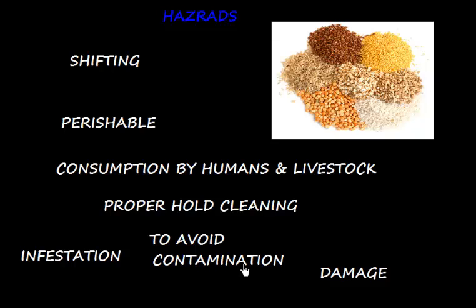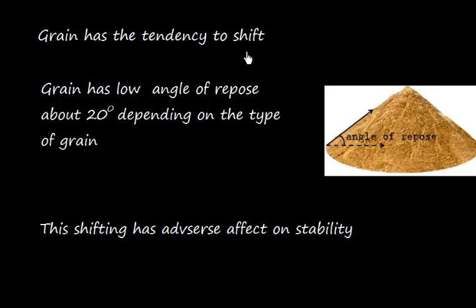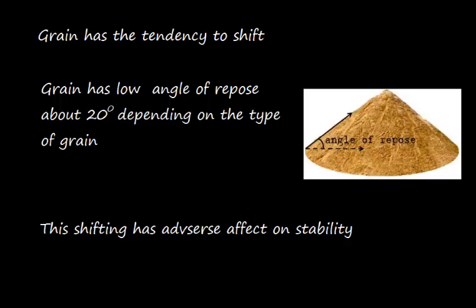Grain has the tendency to shift. Now we'll focus on this hazard. Grain has a low angle of repose, about 20 degrees depending on the type of grain. The angle of repose is the maximum slope measured in degrees from the horizontal at which loose solid material will remain in place without sliding.